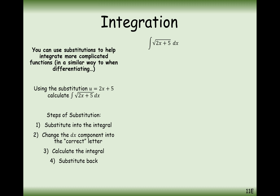So we'll start with the integral of the square root of 2x plus 5 dx, and we'll first substitute in u equaling 2x plus 5. In this case, we've now just got the square root of u, but this dx at the end is a bit of an issue. If we're integrating the u function here, we need du so that we're integrating with respect to the correct letter.